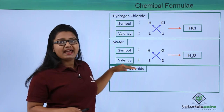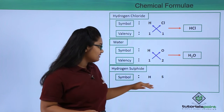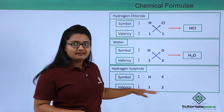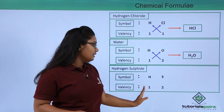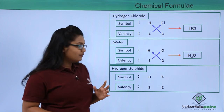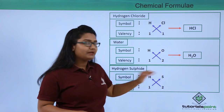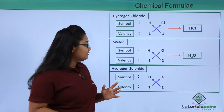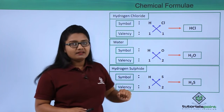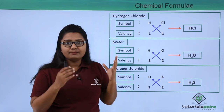For hydrogen sulfide, it must contain hydrogen and sulfur atoms. We write symbols H and S, with valencies 1 for hydrogen and 2 for sulfur. Crossing over: 2 goes to H and 1 goes to S, giving the formula H₂S.